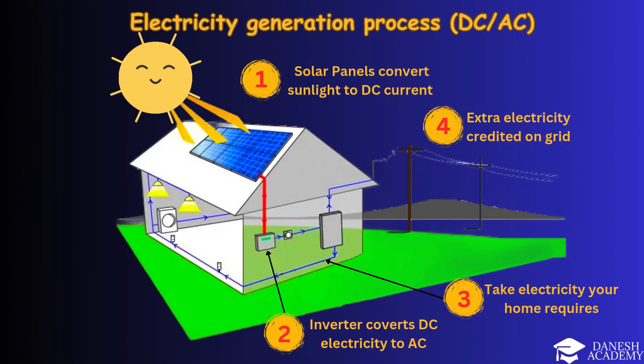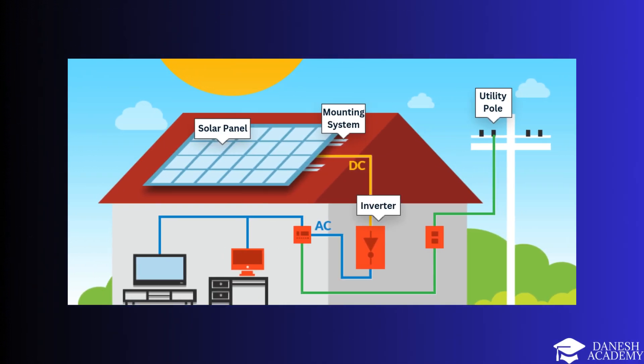Solar panels convert sunlight into direct current DC electricity. Inverter: Transforms DC into alternating current AC for home use. Home usage: Powers appliances. Any extra electricity is sent to the grid. Grid credits: Surplus energy earns credits or reduces electricity bills. This process ensures clean, efficient energy for your home and the grid.